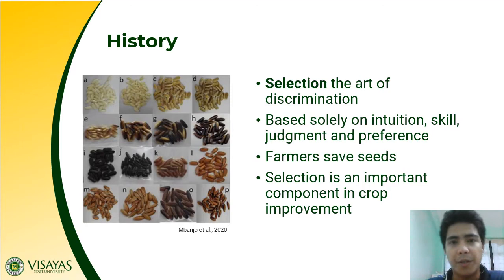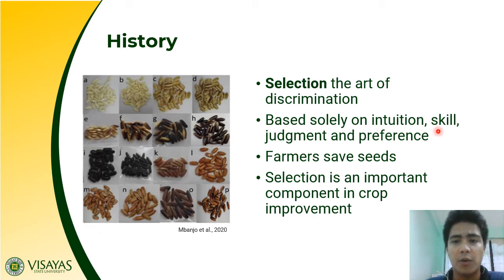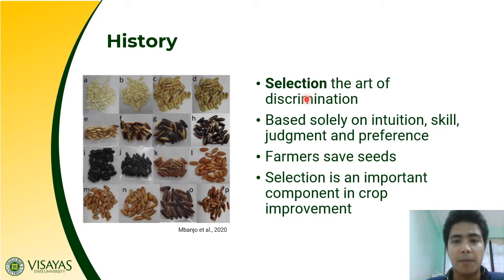Plant breeding started after the invention of agriculture and during the process of domestication. During domestication, humans also discovered the time-honored and most basic technique in plant breeding, which is selection. Selection is defined as the art of discriminating variation within a population to identify and select the best variants. Selection is done based solely on the intuition, skill, judgment, and preference of our ancestors — or even today, farmers when they save seeds select the best plants based on their preferences.